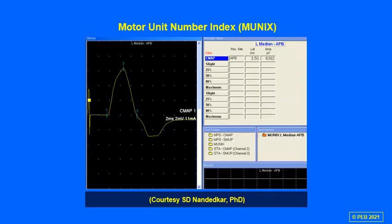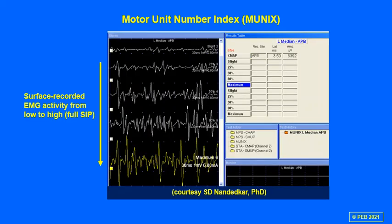We basically want to do a contrast study using these different techniques head-to-head in the same subjects at the same intervals, so we have a better sense of how they stack up against each other. With motor unit number indexing the starting point is the CMAP. The beauty of this technique is that it's non-invasive: all we need is a few stimulations to record the CMAP, and then the subject activates their muscle from a small amount of effort.